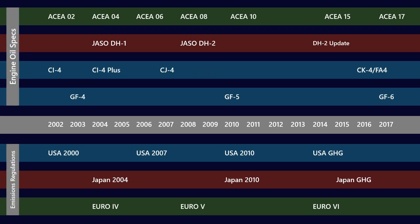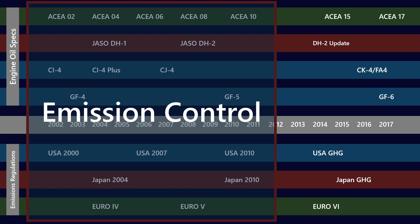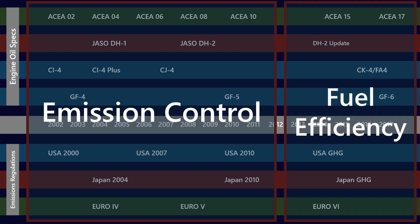In a previous video on CK4 and FA4 oils, we talked about the development of engine oil standards. At least in the diesel engine oil space, we talked about engine oil specs and how they map onto emissions regulations around the world, and the fact that we really moved in the early 2000s from an emissions control age through to a fuel efficiency age. Emissions control was related to particulate matter that came out of the exhaust, as well as things like sulfur dioxide, but the gains that had been made there were orders of magnitude.